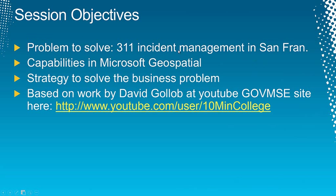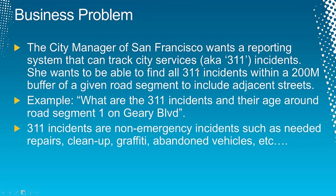The problem we want to solve today is the 311 incident management problem for San Francisco. We want to look at the capabilities of the Microsoft geospatial platform and figure out a strategy to solve the business problem. The city manager of San Francisco wants a reporting system that can track city services incidents — these are 311 incidents, not 911 emergencies but still important to solve. She wants to find all the 311 incidents within a 200-meter buffer of a given road segment, including adjacent streets.